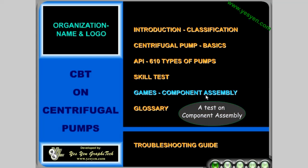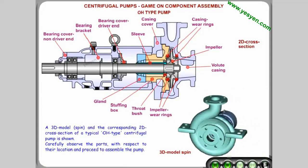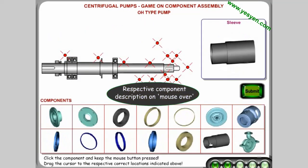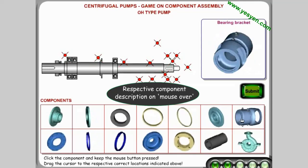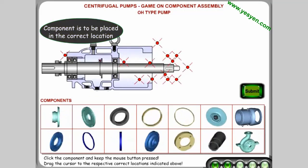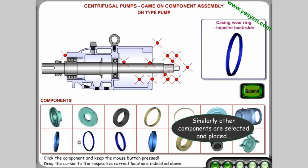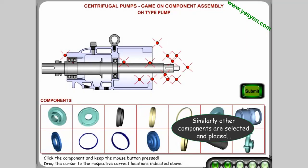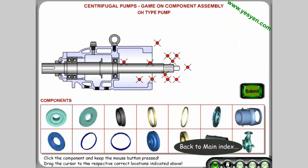A test on component assembly is presented. Respective component descriptions appear on mouse over. A component is selected and placed in the correct location. Similarly, other components are selected and placed. On completion, the assembly is evaluated. Back to main index.